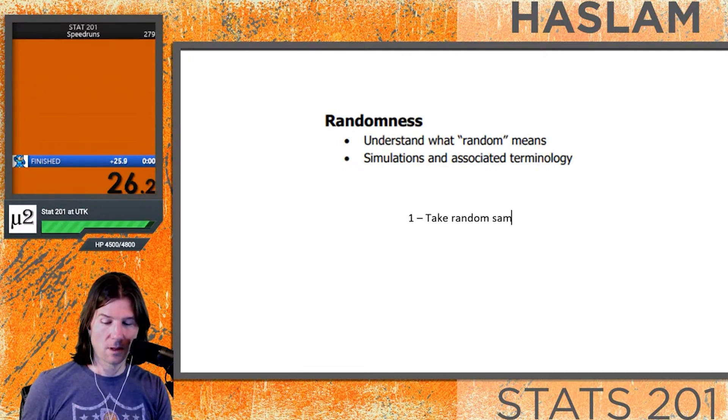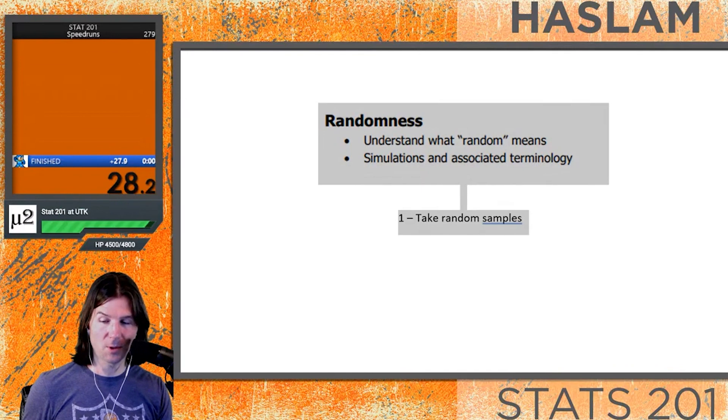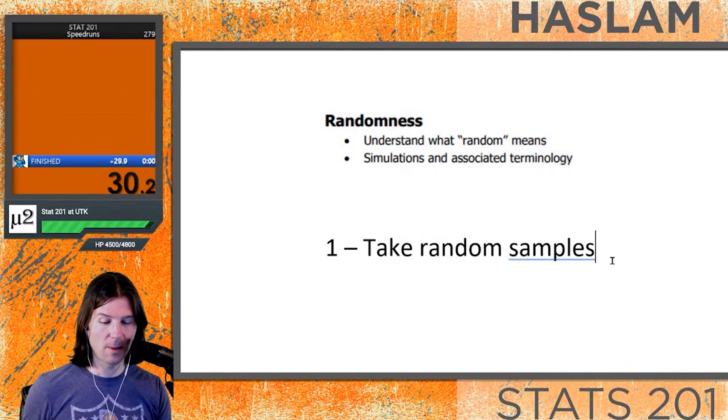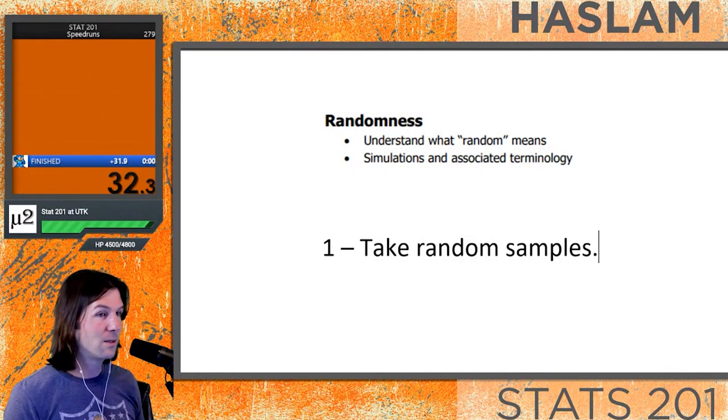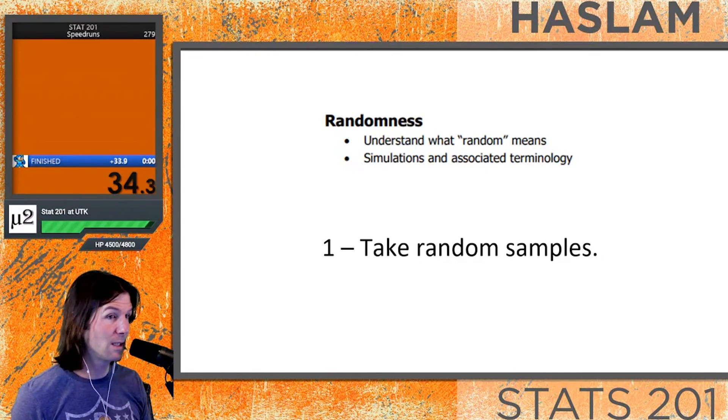We can take random samples and use randomness to randomly select individuals in the population by numbering all individuals and then selecting them randomly. This is a simple random sample, so we love randomness for this.